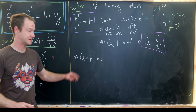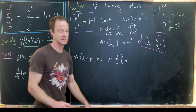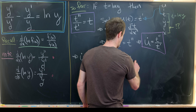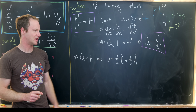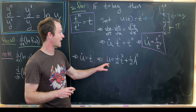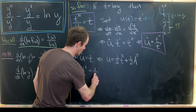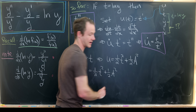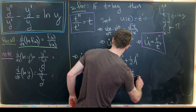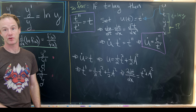Since u̇ = t is a derivative with respect to t, integrating both sides with respect to t gives u = (1/2)t² + constant. We can assume the constant is non-negative and write it as (1/2)a² to simplify notation later. Pulling back into our definition u = t', we get t' = (1/2)t² + (1/2)a², which means 2 dt/dx = t² + a². This gives us separation of variables.